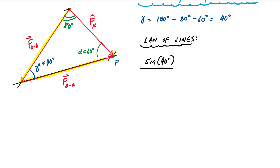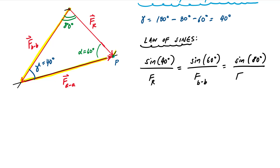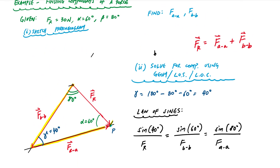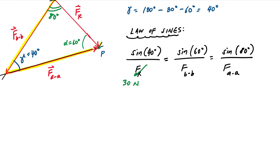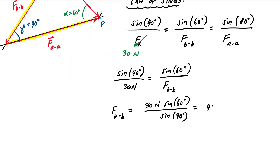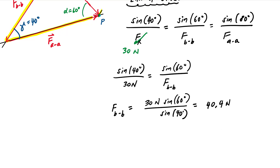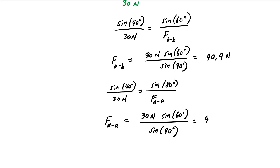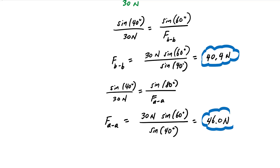From the law of sines: sin(40°)/FR = sin(60°)/F_BB = sin(80°)/F_AA. The resultant force was given as 30 newtons. Solving each relationship: F_BB equals approximately 40.4 newtons, and F_AA equals approximately 46 newtons. Those are the force components along lines AA and BB.